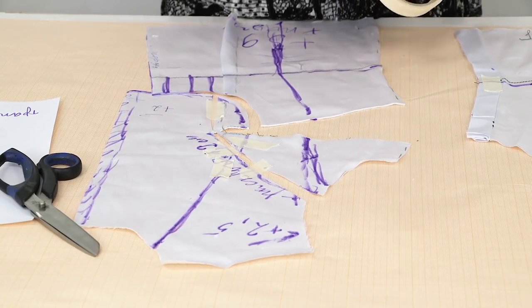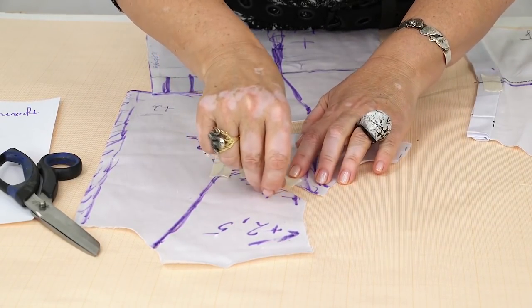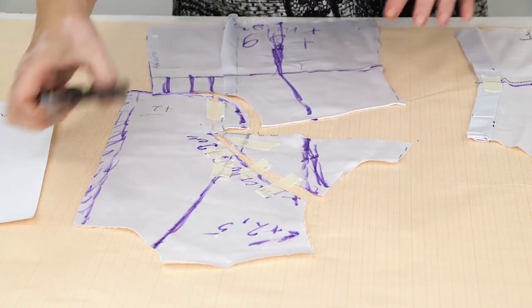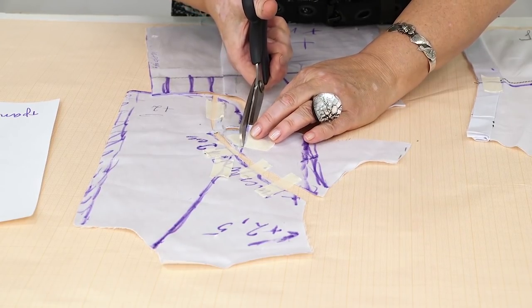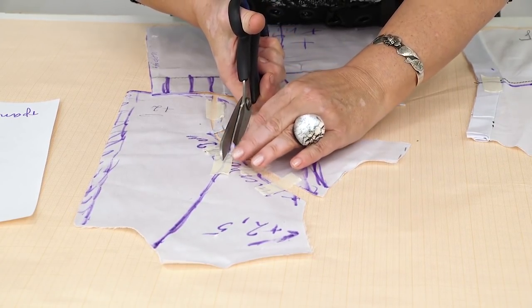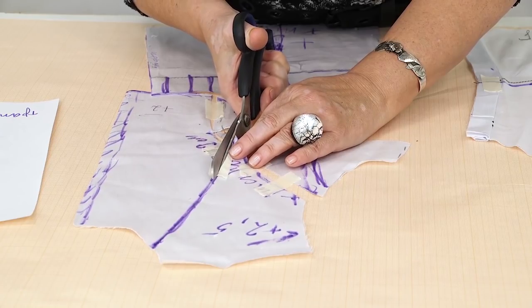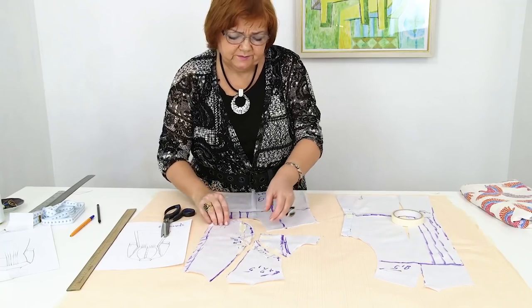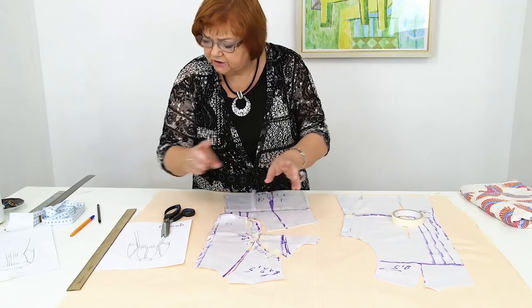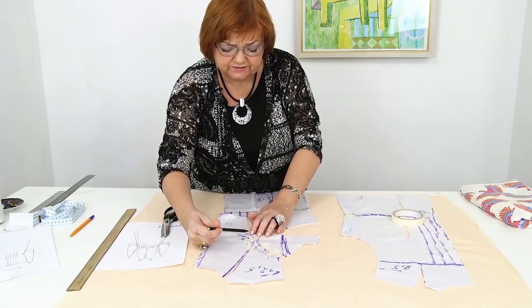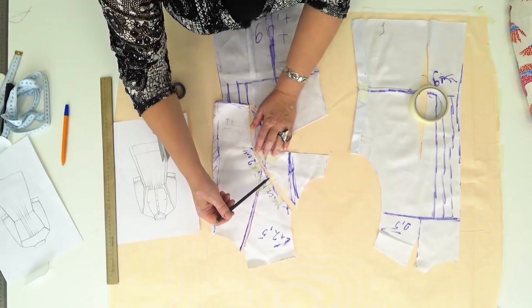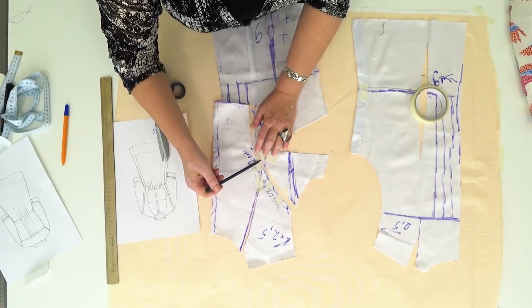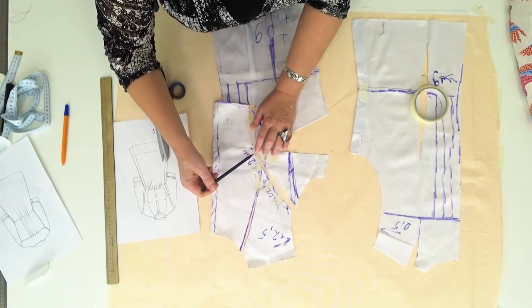Do not forget that we need to make drop shoulders. I want to pay attention to these details once again. Please, be very attentive. We made an opening here in order to make the armhole a bit loose. It will make the dress look more stylish.